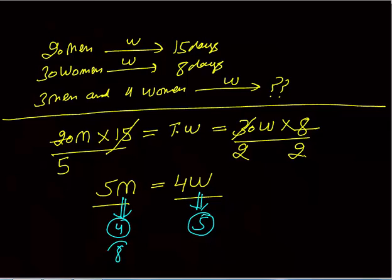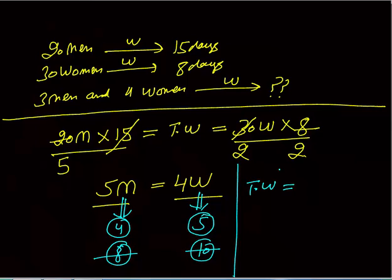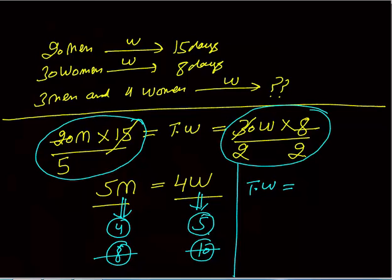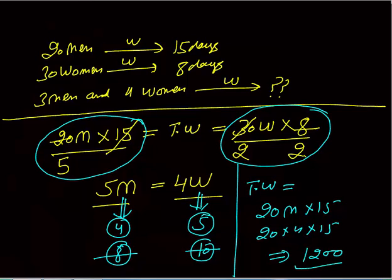We take four and five because they are the smaller numbers, making it easier to solve. So m equals four (man one day work) and w equals five (woman one day work). Now calculate total work: total work was twenty m into fifteen. Putting the value of m: twenty into four into fifteen equals twelve hundred units of work.